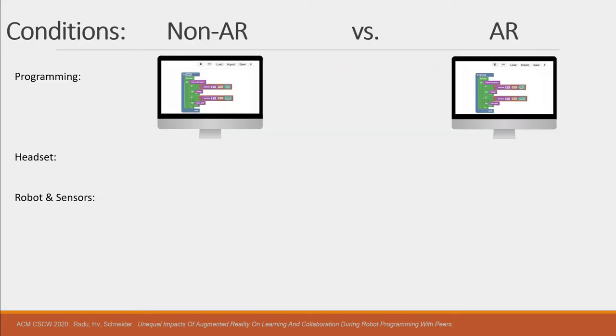In both conditions participants programmed the robot using a block-based programming interface on the computer. Since people experienced novelty effects when first seeing augmented reality we controlled for this by having both groups wear a Microsoft HoloLens headset and both groups saw small visualizations on the robot which just indicated if the program was running or not.